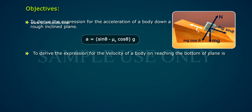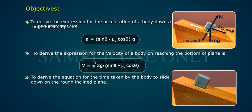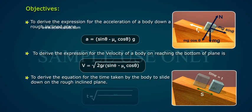To derive the expression for the velocity of a body on reaching the bottom of plane: v equals square root of 2gl(sin θ minus μk cos θ). To derive the equation for the time taken by the body to slide down on the rough inclined plane: T equals square root of 2l divided by g(sin θ minus μk cos θ).